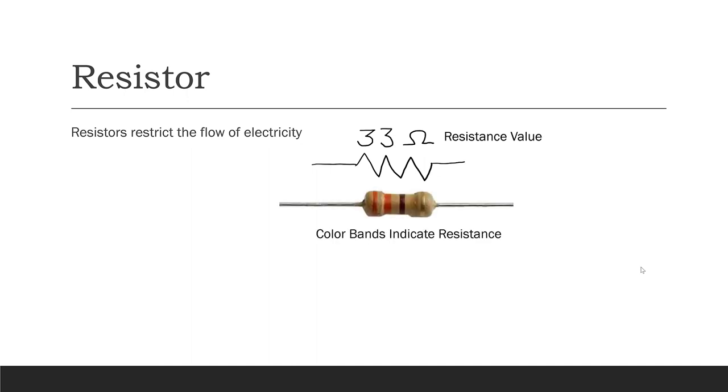A real resistor looks like this. And on a real resistor, the resistance value is often indicated by color bands. We'll talk about what the color bands mean in a later lecture, and how you can interpret them to read the resistance from a resistor.